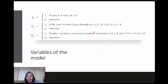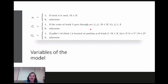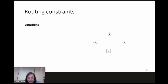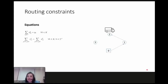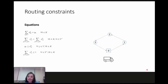For solving this problem we implemented a model with three types of variables: i_k is one if truck k is used; x_kij is one if the route of truck k goes through arc ij; and z_ktip is one if pallet t of client i is located at position p of truck k. The routing constraints ensure each truck starts from the depot, maintains flow conservation at each node, and that if truck k travels from i to j then it is used in the solution.